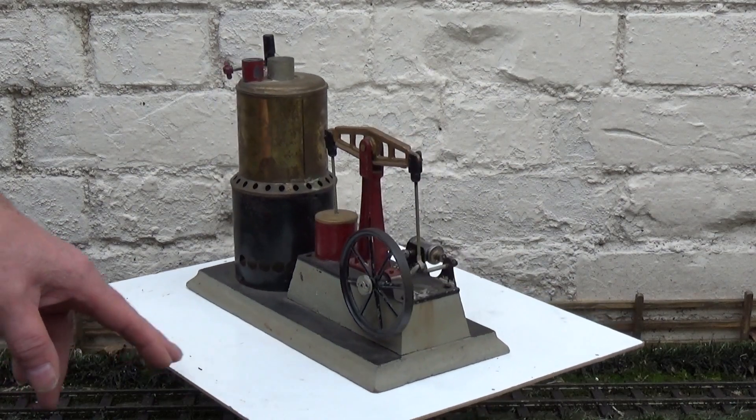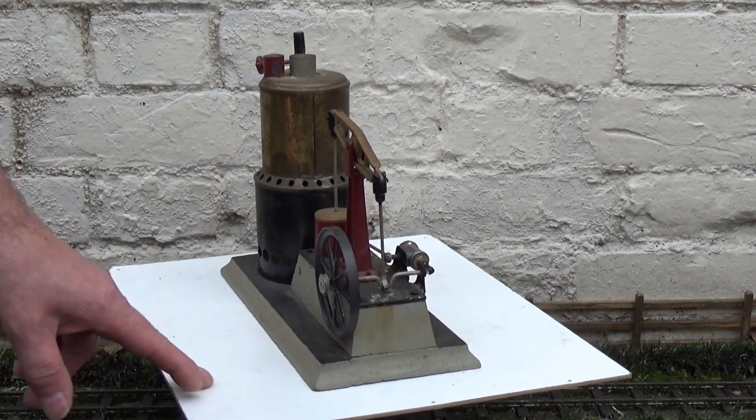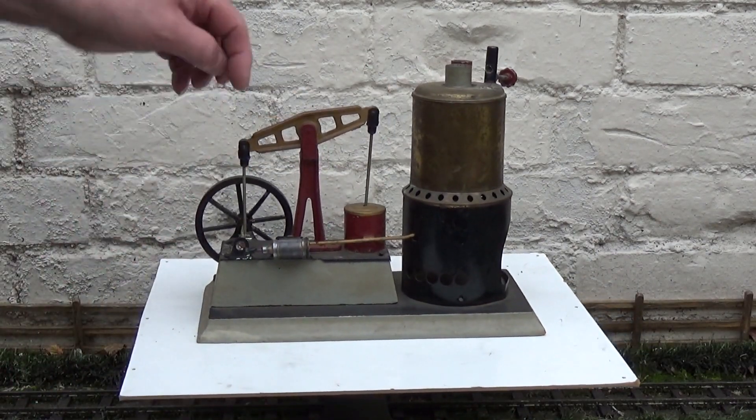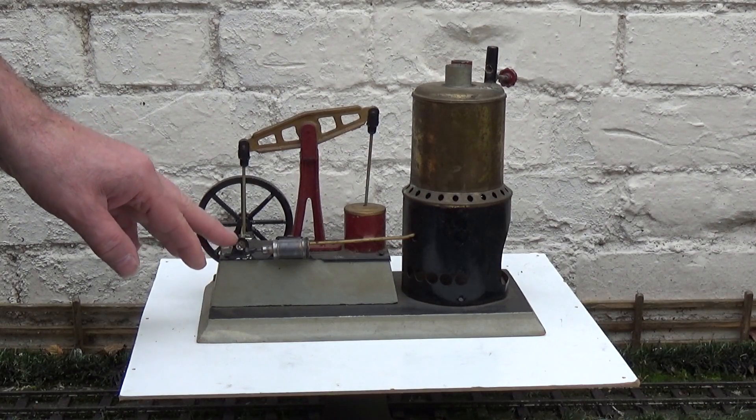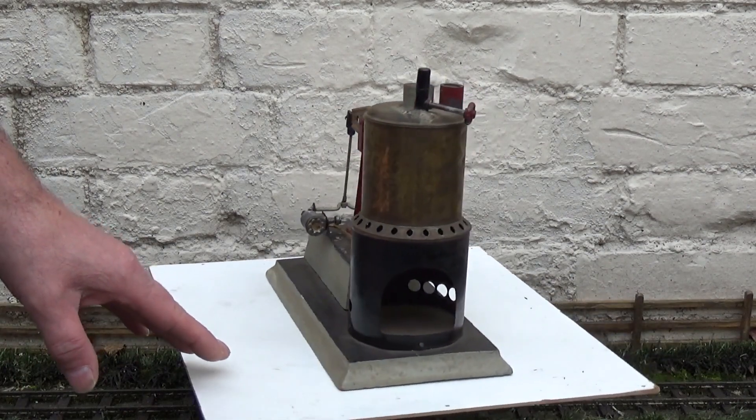It's kind of like a fake beam engine - this is just a dummy cylinder here and this is the actual cylinder which obviously turns the crank which operates the beam. It's missing the crank but that's a fairly easy thing to make. A few problems though.